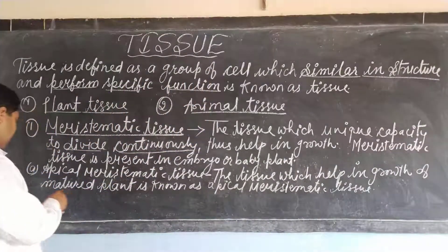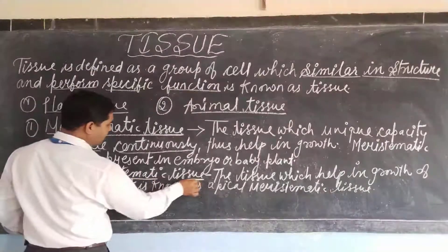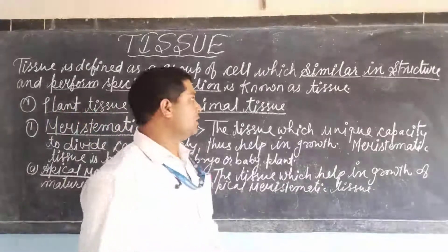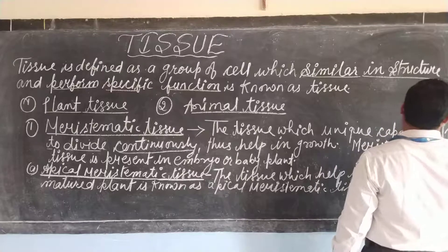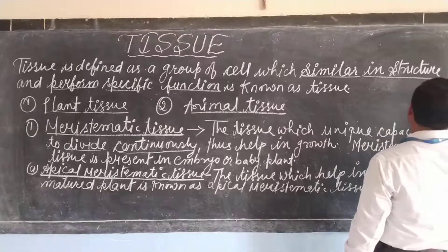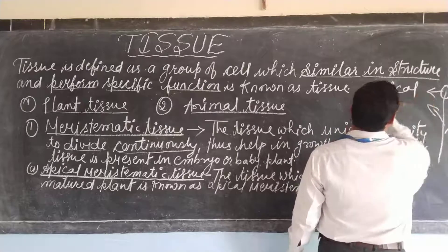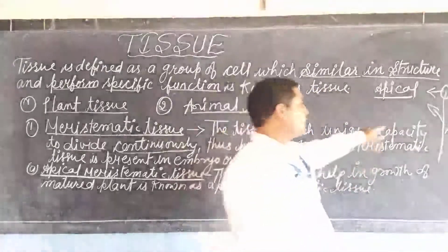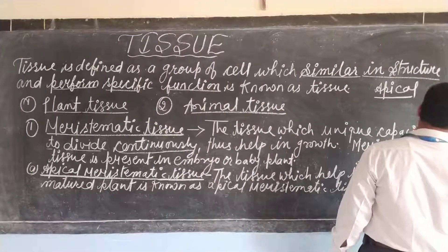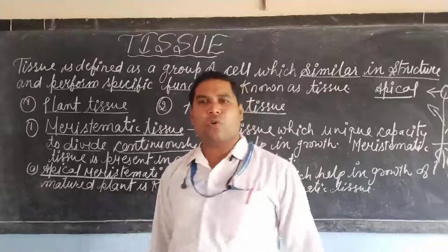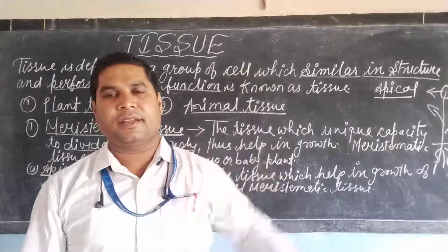Apical meristematic tissue is present at the tip of the plant. Suppose this is a plant — it is present at the tip, apical meristematic tissue is present at the tip and at the tip of the root, and helps the plant to grow length-wise, upward and downward.